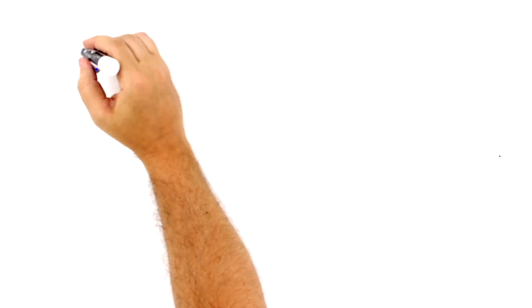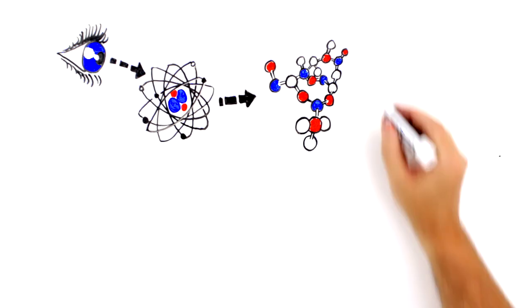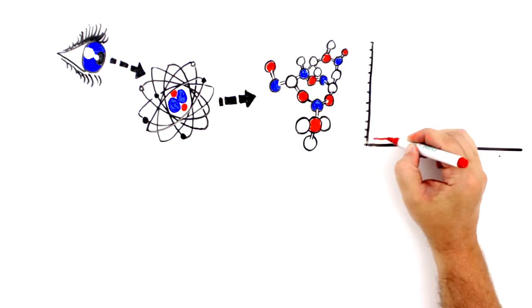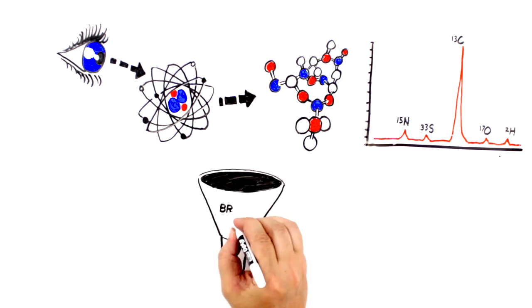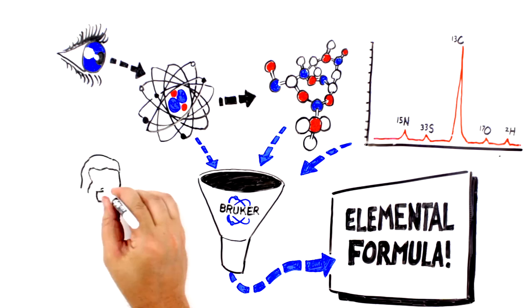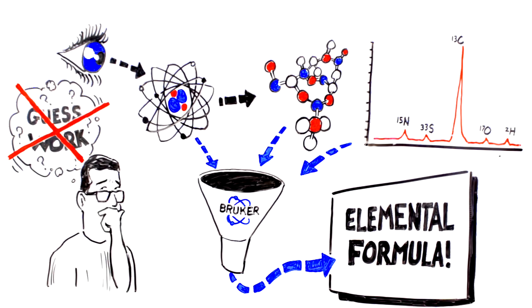Broadband high resolving power also means being able to see all the atoms that make up molecules, which are in fact complex mixtures, through interpreting isotopic fine structure. And only Bruker provides a patented method to use this information for determining elemental formula directly from the mass spectrum. We've eliminated the guesswork that's plagued mass spectrometry since the beginning.